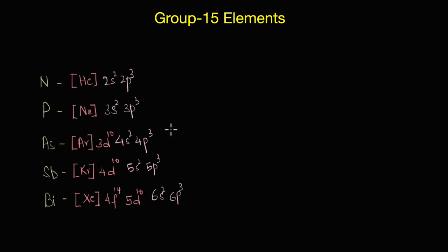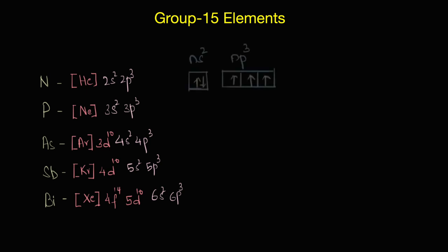We can see that all of these elements have the same number of valence electrons — two electrons in the s orbital and three electrons in the p orbital — giving us a general outer electronic configuration of ns² np³.